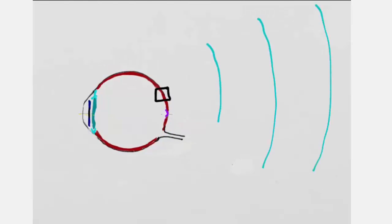What kind of receptors are embedded at the back of the retina, you ask? Well, let me tell you. There are three layers of receptors. The first are ganglion cells. They collect information and send it to the brain through the optic nerve.